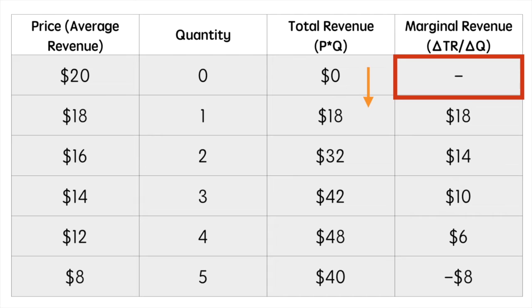We look at the change in total revenue and divide by the change in quantity. In this example, the change in quantity is always equal to 1 and the change in total revenue is different. We can't calculate marginal revenue at quantity 0, but we see that the total revenue rises to $18 when we sell our first unit.